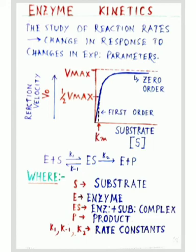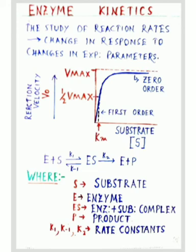The formation of ES is optimized in the transition state. In the curve, substrate concentration is on the X axis and reaction velocity is on the Y axis. Where there is a first order reaction, the reaction is a rapid one. But as the concentration of substrate is gradually increased, all the enzymes become saturated and maximum velocity is gradually attained, where zero order reaction takes place. S stands for substrate, E for enzyme, ES for enzyme-substrate complex, P for product, and K1, K-1, and K2 are all rate constants.